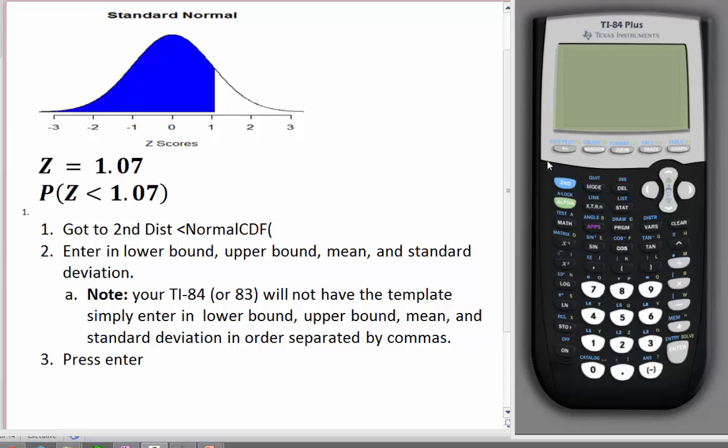In this example, I'll show you how you can use the TI-84 to find proportions under the curve. We have the standard normal distribution with a mean of 0 and a standard deviation of 1. We want to find the area that falls below the z-score of 1.07. As always, I suggest that you draw your distribution and shade in the region.